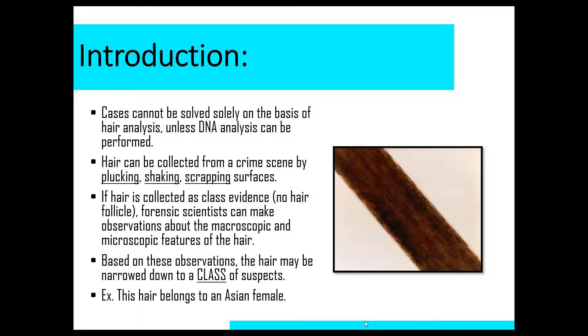Hair can be collected from crime scenes a couple different ways. So plucking, shaking, and scraping surfaces are all ways that investigators can retrieve hair samples. Also, adhesives are a way that investigators can collect hair samples. Sometimes, like if they have a victim and they want to collect hair samples from the clothing of the victim, they might use adhesives.